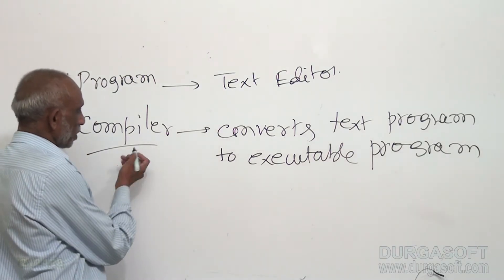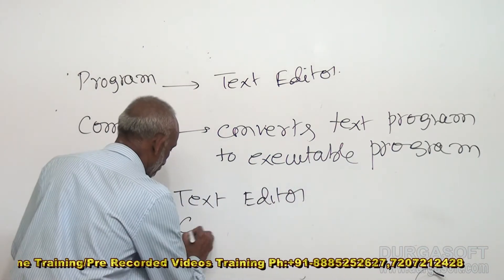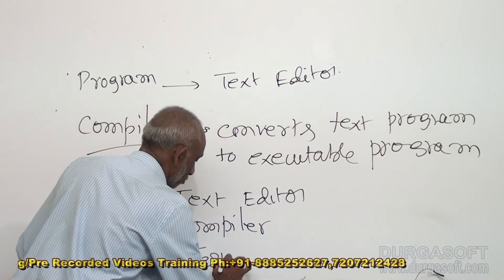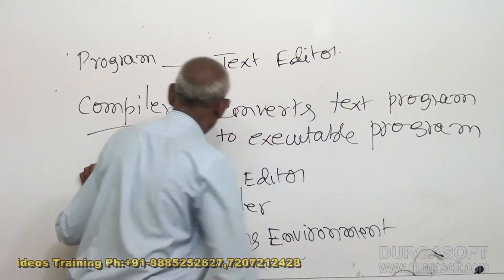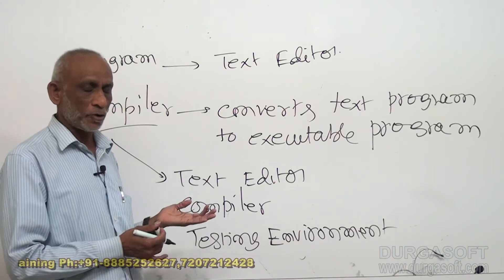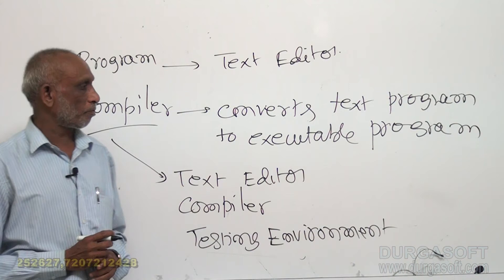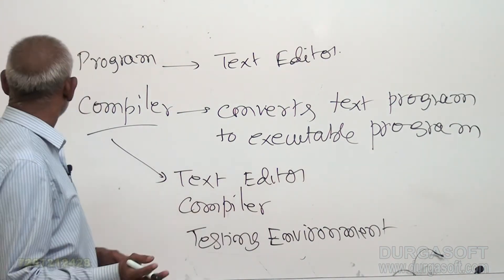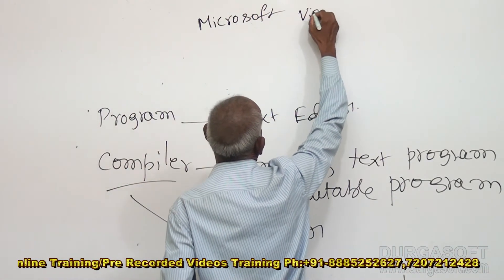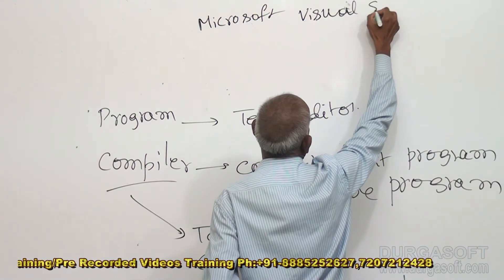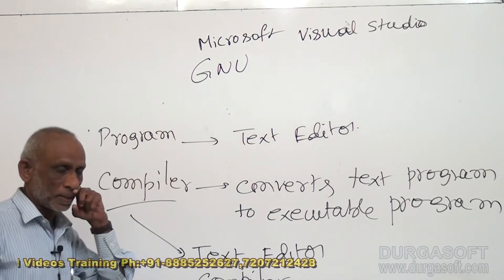Usually, this compiler itself provides a text editor, compiler, and also a testing environment. A commercial compiler provides a text editor for writing the program, then the compiler which will compile and convert into executable, and it will also allow us to test and complete the program development. Some examples of commercially available compilers are Microsoft Visual Studio and GNU compiler.